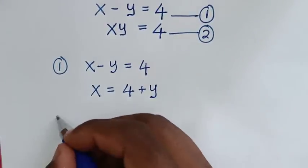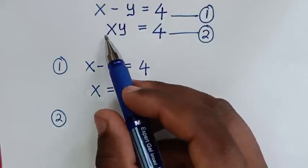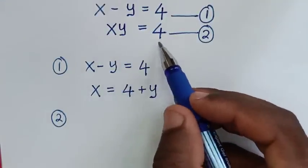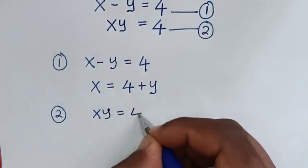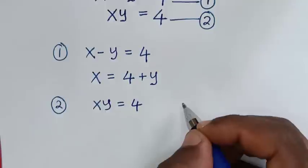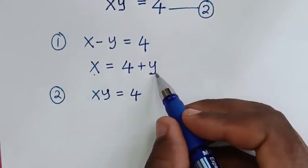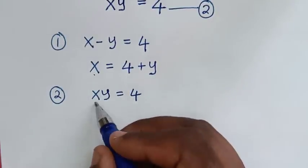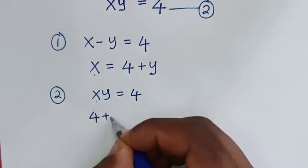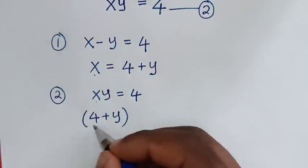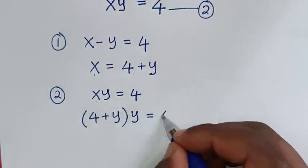In the next step, from equation 2, which is x times y is equal to 4, we substitute the value of x which is 4 plus y. So we substitute 4 plus y in place of x, then bracket times y is equal to 4.